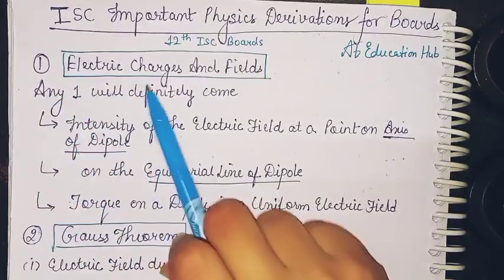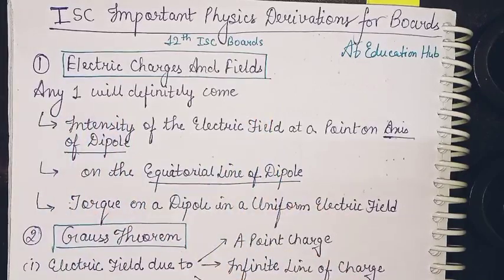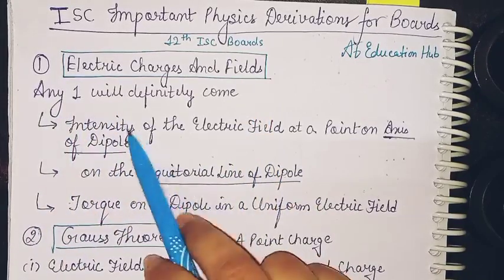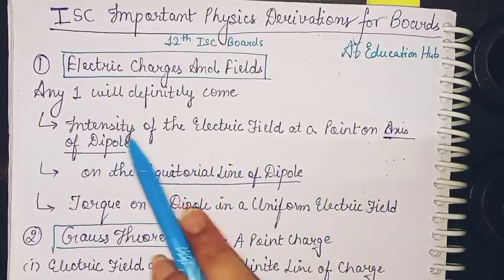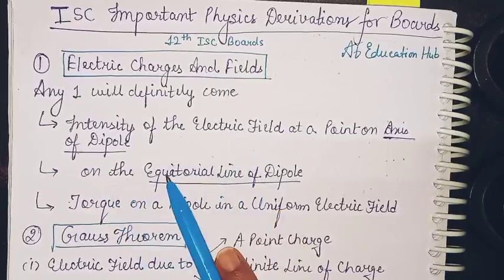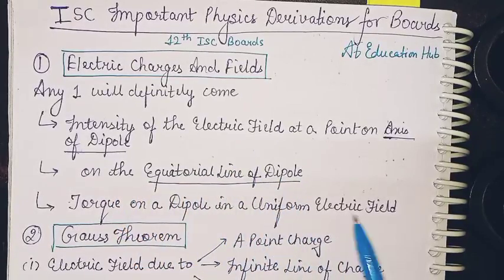The first chapter is electric charges and fields. Now out of these three you can expect any one: intensity of the electric field at a point on axis of dipole, intensity of the electric field on the equatorial line of dipole, or torque on a dipole in a uniform electric field.